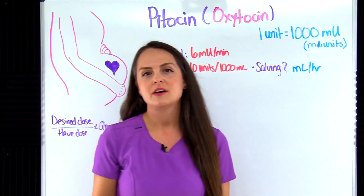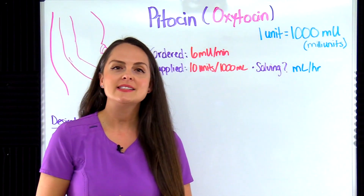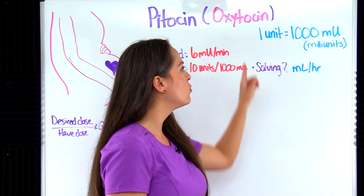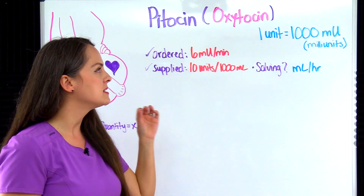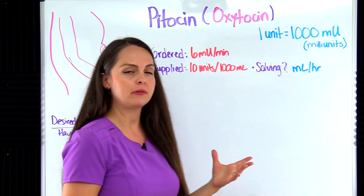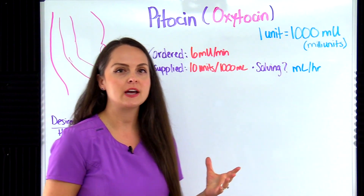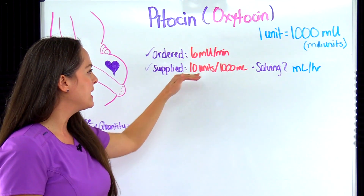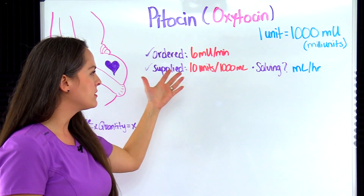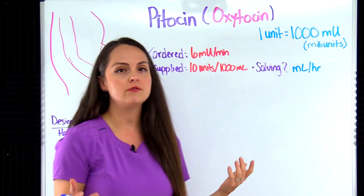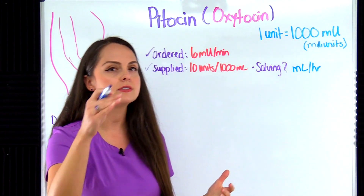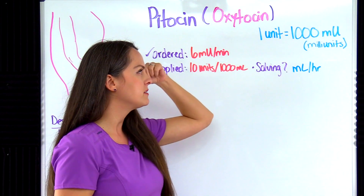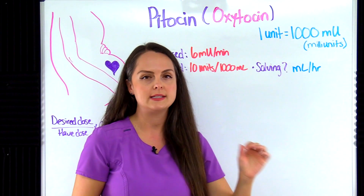When you're solving Pitocin dosage calculation problems, there is a metric conversion that you want to remember: one unit equals a thousand milliunits. The reason you want to remember this is because Pitocin is going to be ordered in milliunits per minute, and you're going to be supplied with a bag of Pitocin that's in units. So you've got to be able to convert between milliunits and units, and having that in the memory bank will make it super easy.